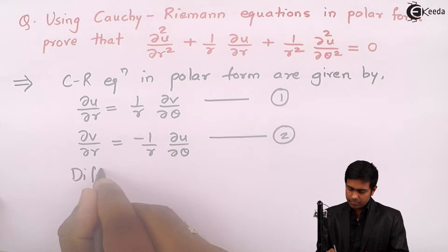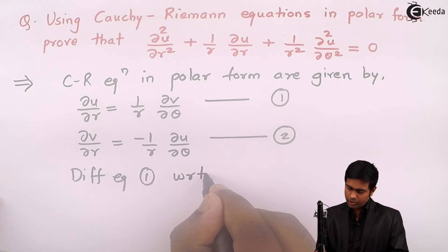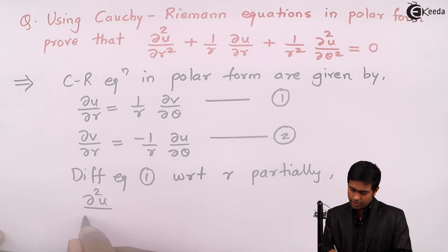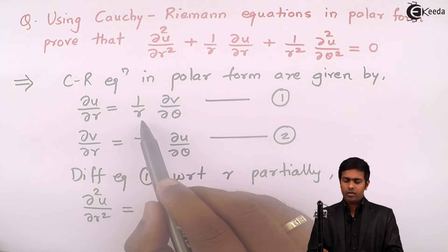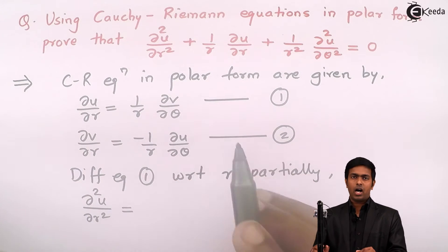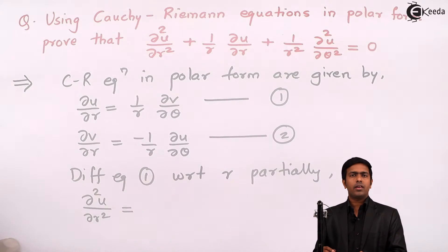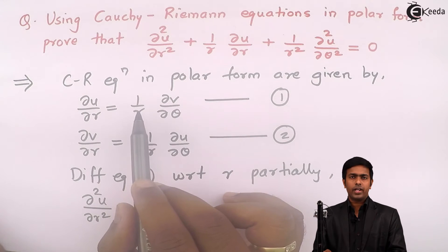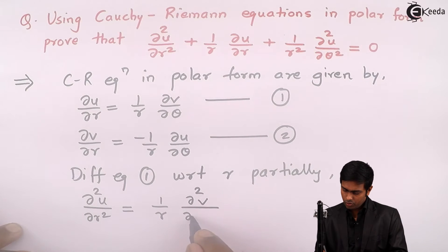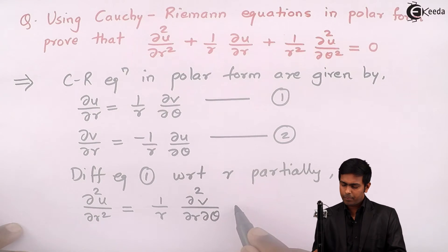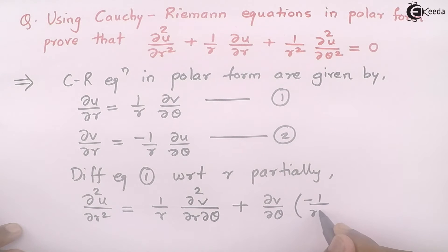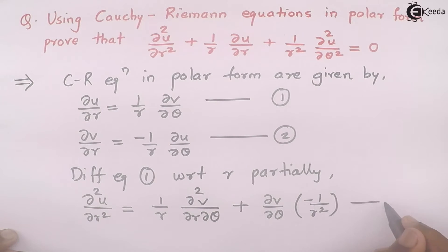Differentiating equation number 1 with respect to r partially, we get ∂²u/∂r². On the right-hand side, we have the term (1/r)(∂v/∂θ), where v is a function of r and θ, so we apply the product rule. This gives (1/r)(∂²v/∂r∂θ) plus (∂v/∂θ) times (-1/r²). So we get equation number 3: ∂²u/∂r² = (1/r)(∂²v/∂r∂θ) - (1/r²)(∂v/∂θ).